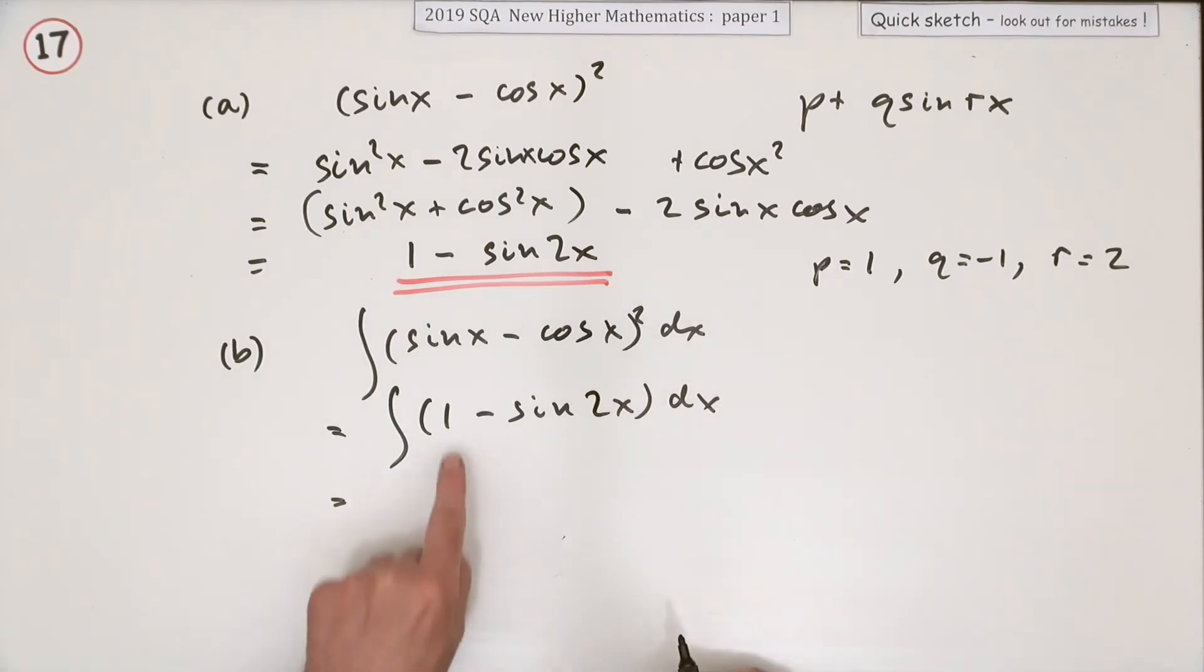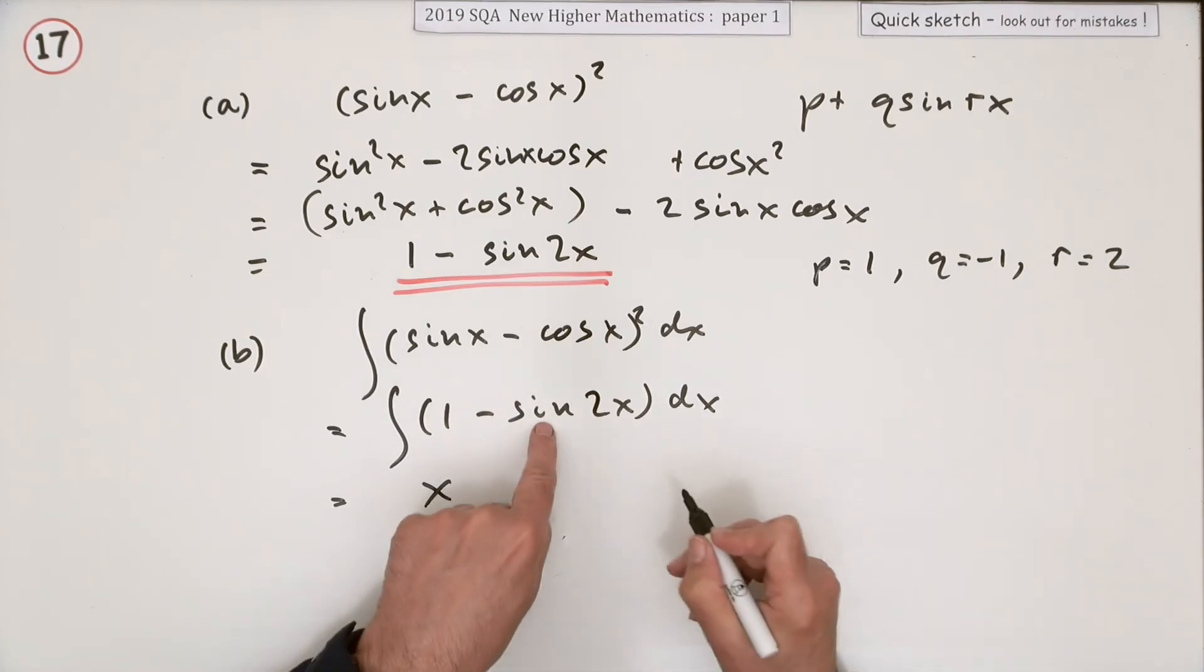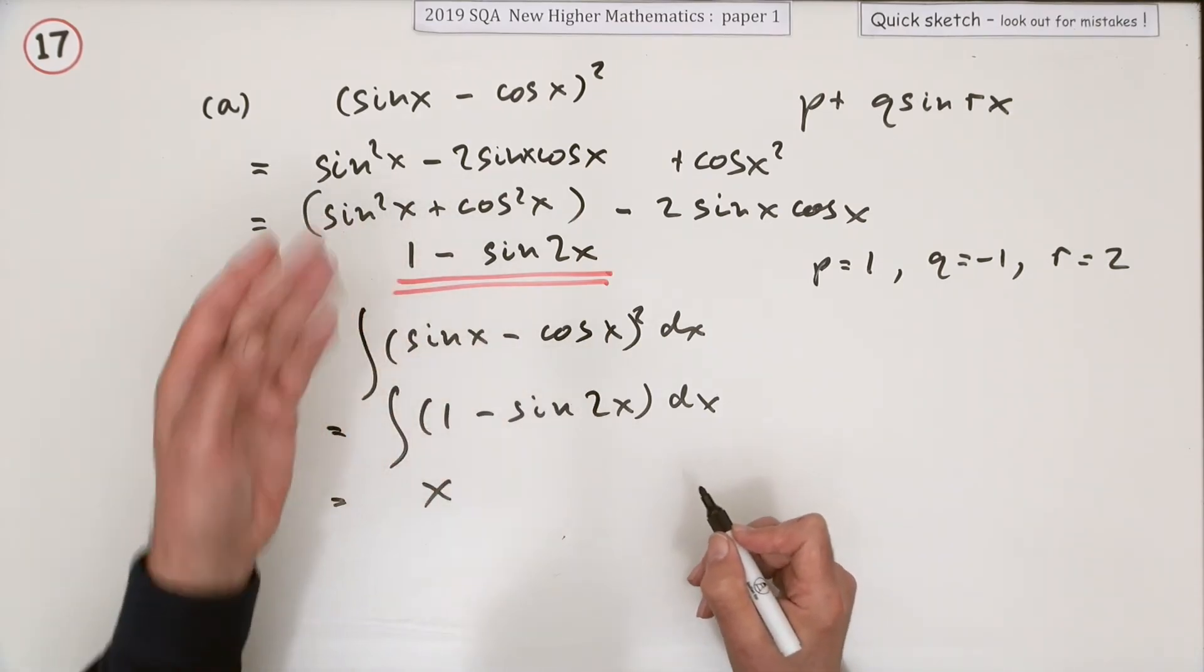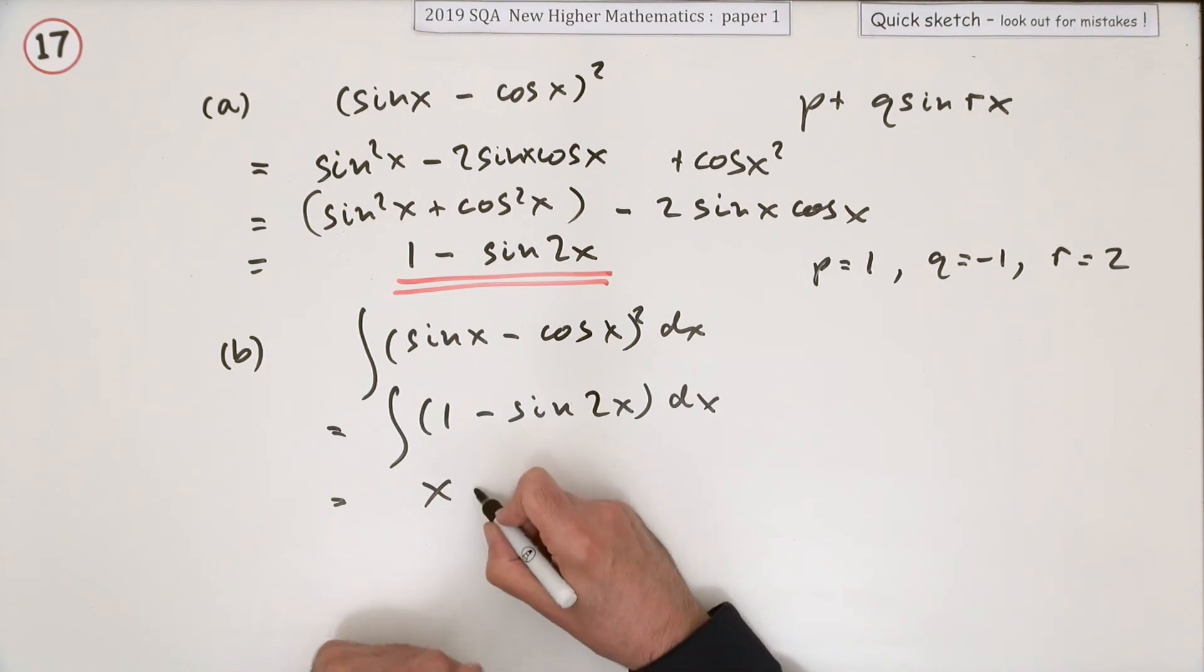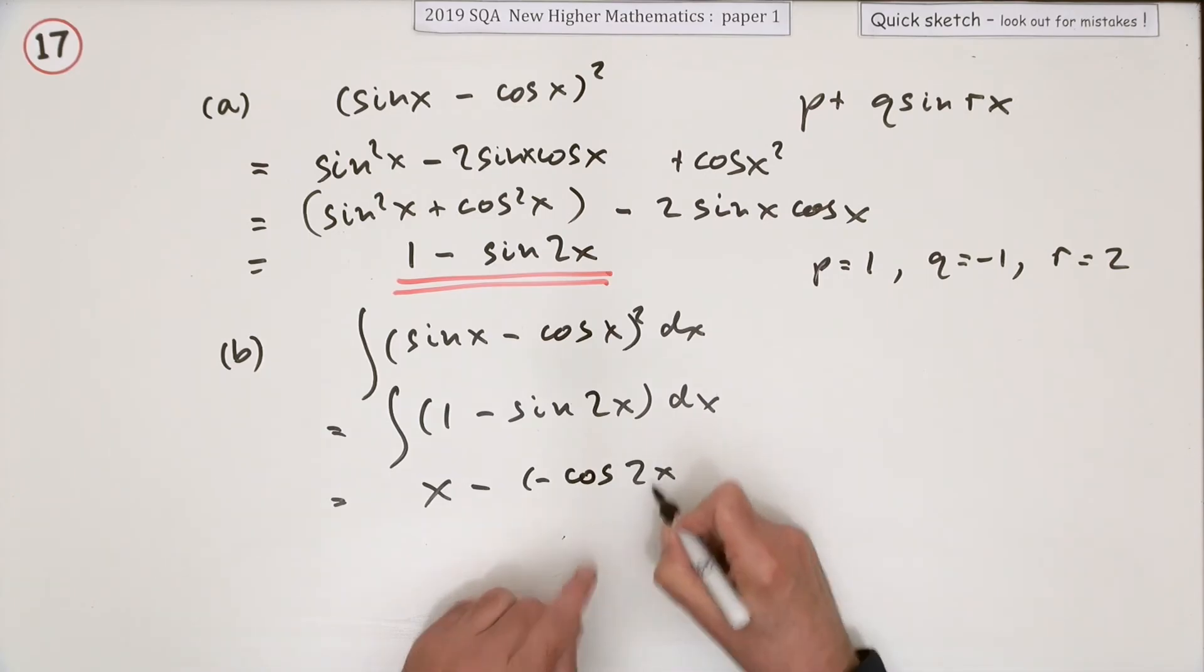And that's something you can integrate because that's a simple term. One goes back up to x, and sine goes back to negative cos. I'll show that - it goes back to negative cos of whatever it's acting on, which of course is 2x.